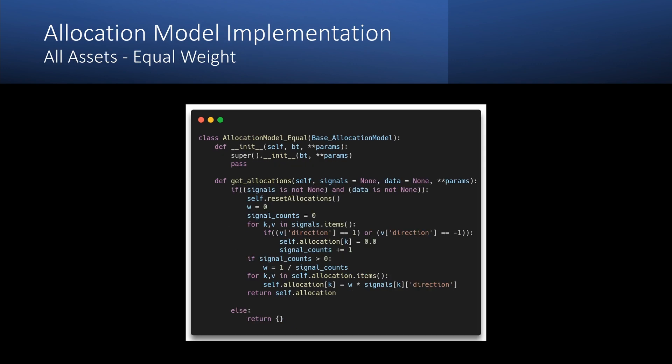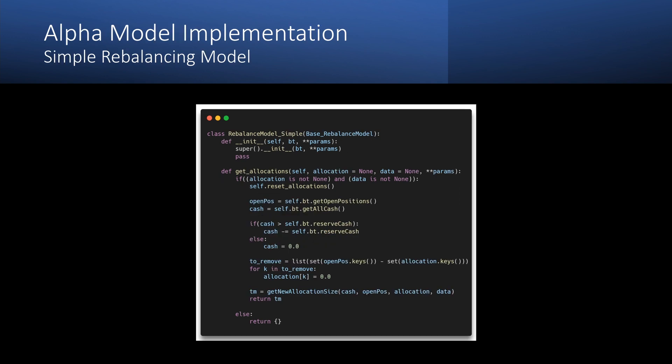The next is an allocation model. Let's implement the model which assigns equal weight to all our assets. And the last model which we need to implement is the rebalance model. This implementation is generic and performs simple rebalancing based on assigned weights.